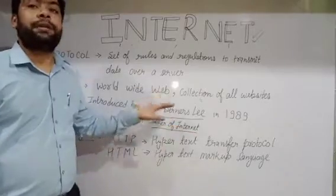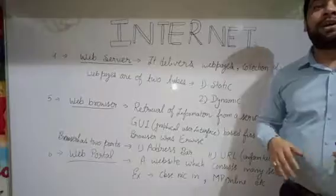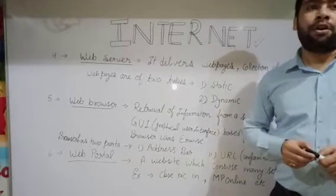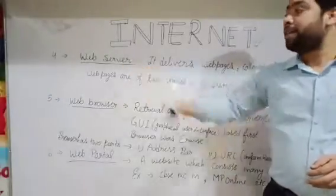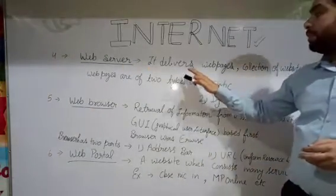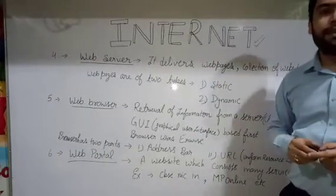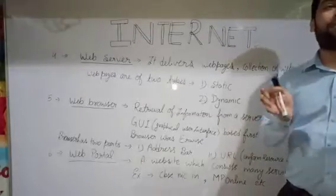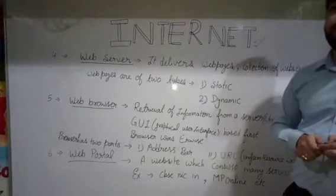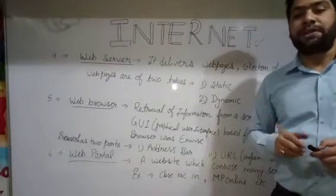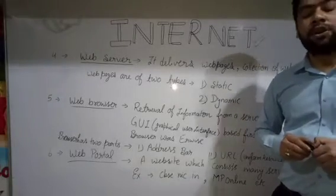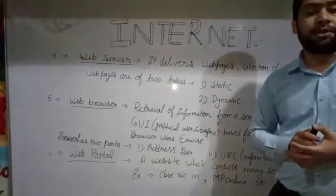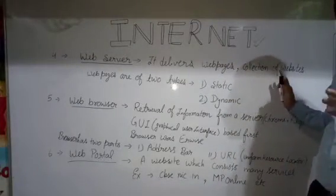Now, point four: web server. A web server delivers web pages. Web pages are the different parts of a website that contain different types of data or information about a subject. For example, when we open any website on our computer, the very first page is called the home page, and the rest are called web pages. A web page is where the website stores all types of information or data.